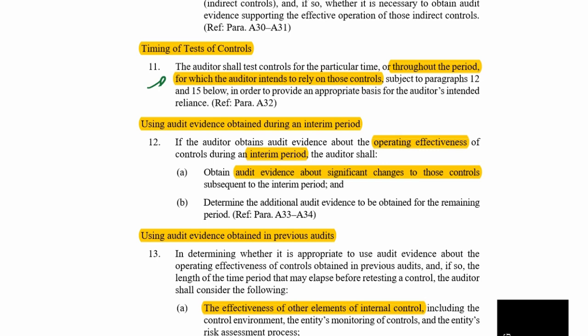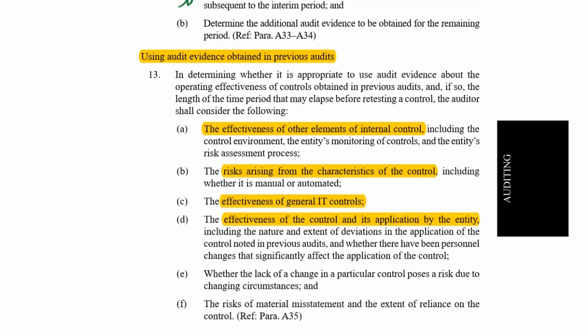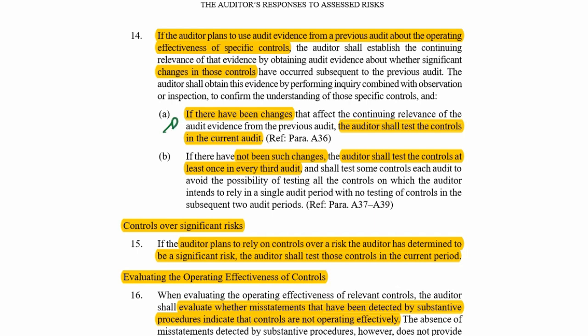When using audit evidence obtained at an interim stage, you must ensure there are no changes subsequent to that interim period. When using audit evidence from previous audits, you can do so, but you must ensure internal controls have been effective, understand any risks arising, and confirm that general controls were effective if a computer information system was used. Most importantly, there must have been no changes, and you must have tested that control at least once in every third audit. This can be placed under nature or extent.